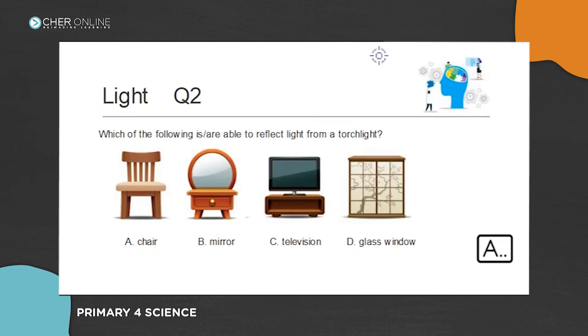Yes, so all of them can reflect light. When light falls on them, they'll reflect light into your eyes. So the answer is A, B, C, D. You can see them, right? All your chairs at home, you can see them as long as there's light. They are able to reflect light into your eyes.